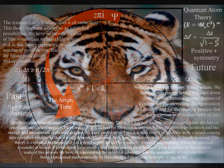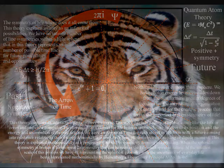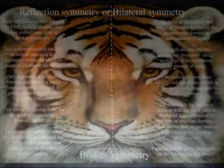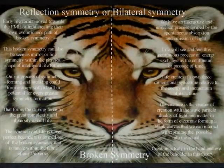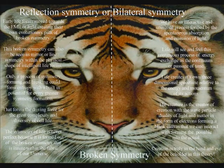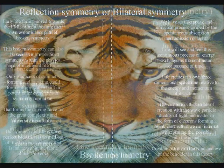Because life is creating the timeline of its own evolutionary path out of this geometrical process, this broken symmetry can even be seen as mirror or line symmetry within the physical shape of intelligent life.